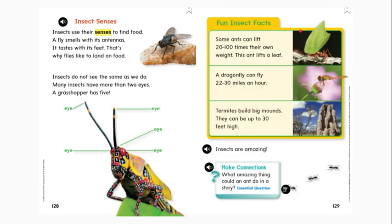Take a look at page 128. Can you find the heading on page 128? This heading says insect senses. Remember, a heading is the name of a part of a text. It gives you an idea of what that part of text is about. What do you think this section will be about? It will be about the senses insects have.